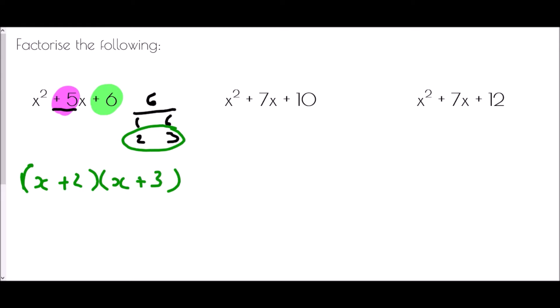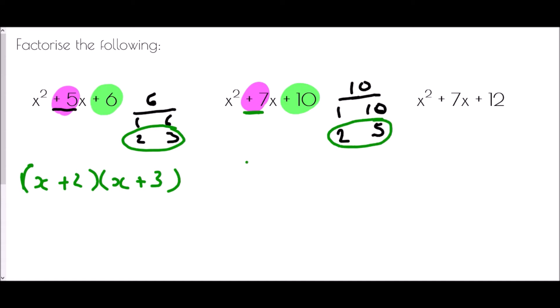Let's try again with x squared plus seven x plus ten. I need a pair of numbers which multiply to make ten but add to make seven. Factors of ten: one and ten, then two and five — there are no more. Which pair adds to make plus seven? That's two and five. So my brackets would each have an x, with plus two in one bracket and plus five in the other.